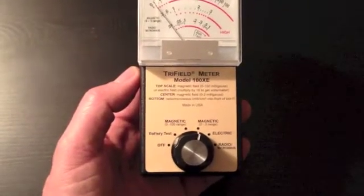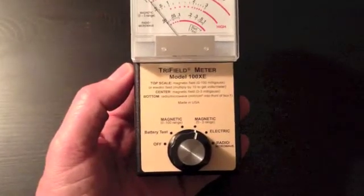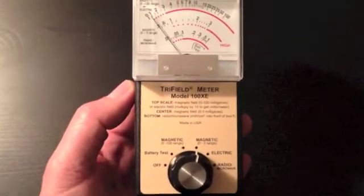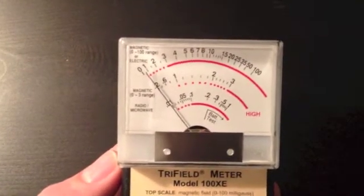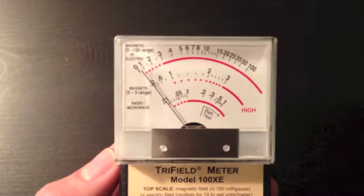We use this primarily to measure magnetic EMFs, and I have it on the sensitive setting right now, so that would be the middle gauge. And this is very low, it's under one milligauss, as you can see.